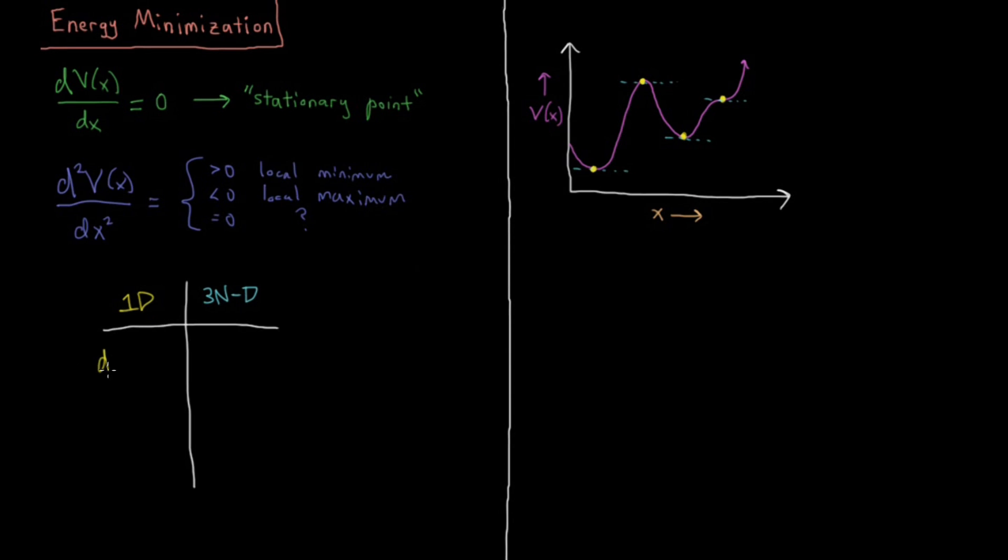In 1D, the criterion for being a stationary point was dV(x)/dx = 0. In 3N dimensions, that is the negative gradient of the 3N-dimensional energy function depending on x₁, y₁, z₁, x₂, y₂, z₂, all the way up through N atoms—that is equal to zero. Or more properly, we could say that the magnitude of that is equal to zero.